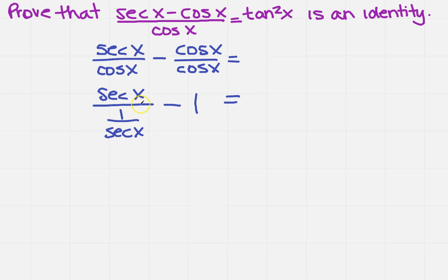Now, the first term simplifies, right? If I have something divided by 1 over something, I'm actually multiplying the two together. So I get secant squared x minus 1.